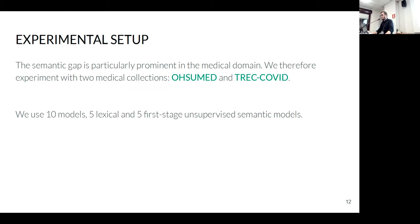To answer our questions, we considered two collections: OHSUMED and the TREC-COVID collections. Both are medical collections, since that is a setting in which the semantic gap is particularly prominent. We considered five lexical models and five unsupervised semantic models. We specifically used first-stage unsupervised semantic models to allow a fairer comparison with lexical models, since being unsupervised they do not encode relevance information.